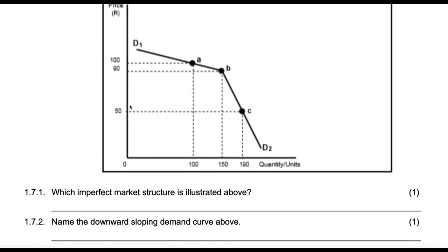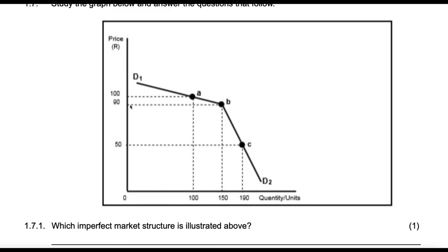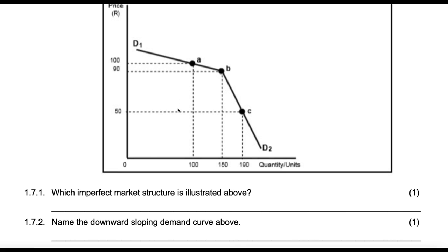Which imperfect market is illustrated by the graph above? This one is an oligopoly. We know that because it's the only market structure with a kinked demand curve.